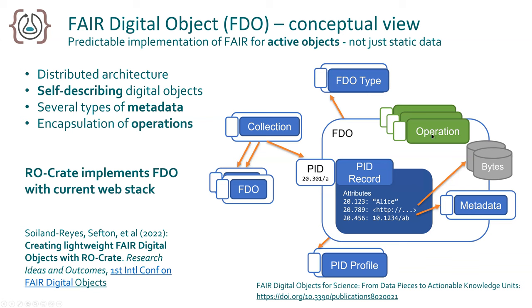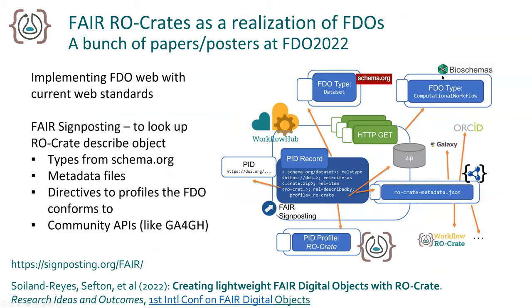Typically there are some bytes you can download or separate metadata on the side, and all of these are of a certain type — and here's the trick of FAIR Digital Objects: those types are also persistent identifiers, also FAIR Digital Objects. So it's turtles all the way down — an ecosystem where all follow the same pattern, enabling machine actionability. RO-Crate is one way to implement FAIR Digital Objects using the current web. In the Workflow Hub, you have a PID for the workflow and can find the metadata alongside it.